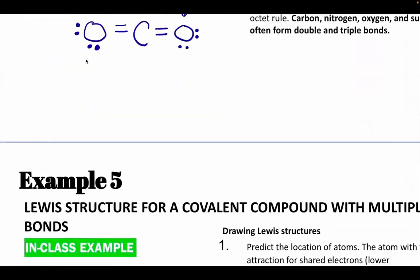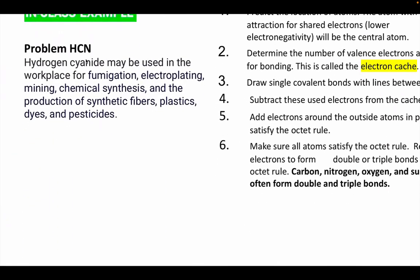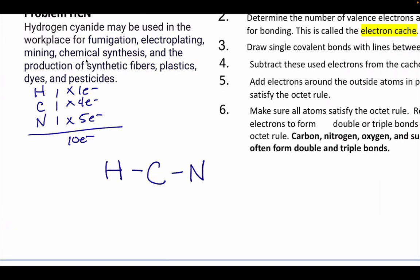Let's try another one. This is HCN. First we'll calculate the cache. There's one of each element, so I end up with 10 electrons. Carbon goes in the middle. I've used up 4.